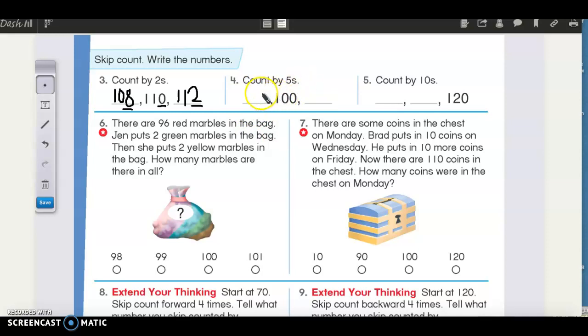Okay, ready? So before would be 95 and then 100, 105. Because the pattern, like we practiced yesterday, for fives goes 5, 0, 5, 0. All right, now let's skip count by tens.